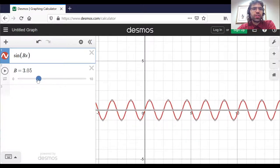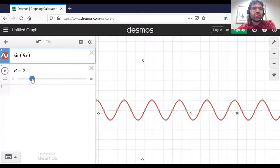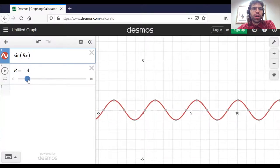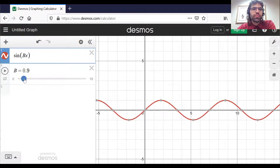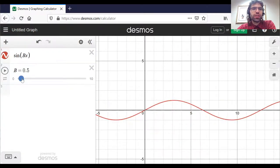Conversely, if I let b be less than one, it's increasing the period.